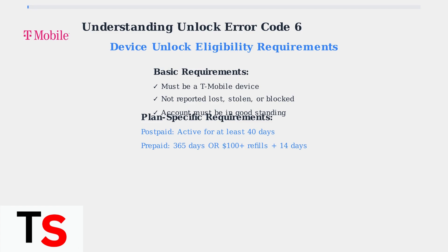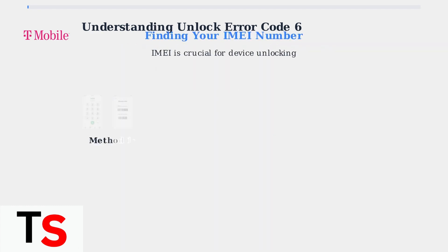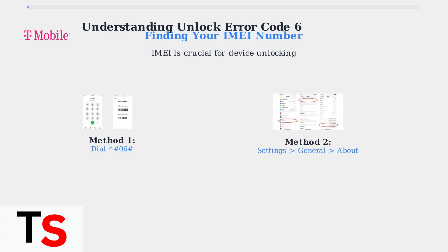For prepaid plans, either 365 days must have passed since activation, or you need more than $100 in refills with at least 14 days since purchase. The IMEI number is crucial for unlocking your device. You can find it by dialing *#06# or by going to Settings, then General, then About on your device.